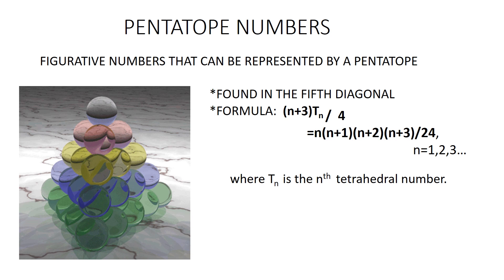Pentatope numbers. A pentatope number is a figurative number which represents the number of dots that can be uniformly arranged to form a pentatope, which is a four-dimensional analog of a solid tetrahedron. The sequence is 1, 5, 15, and so on. The general formula is (n+3)·tn / 4, which equals n(n+1)(n+2)(n+3) / 24, where tn is the nth tetrahedral number and n belongs to natural numbers.